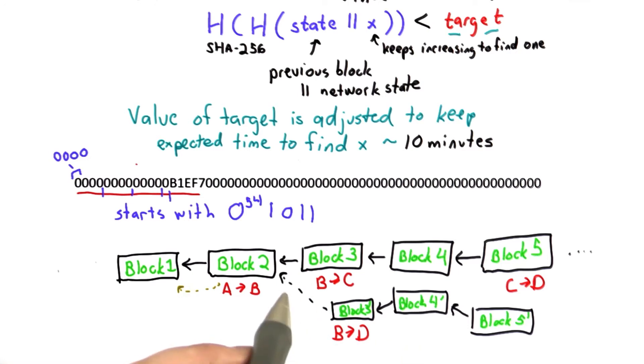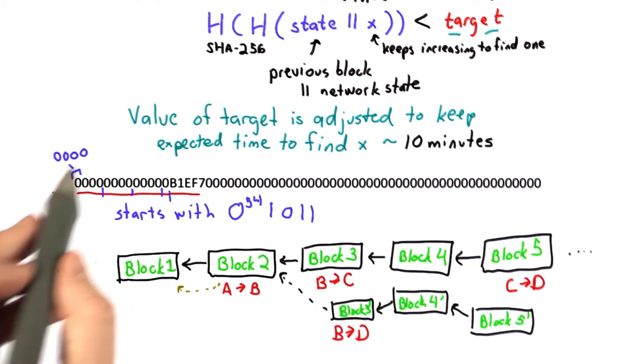The incentives are set up in such a way to make it unlikely that someone would want to do that, since if you do find the next hash value in the chain, you can create a new block, which is worth 50 bitcoins.